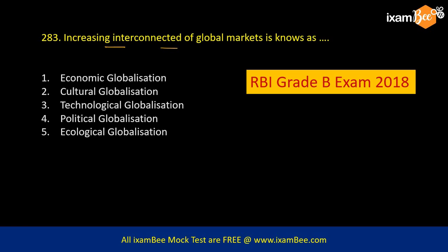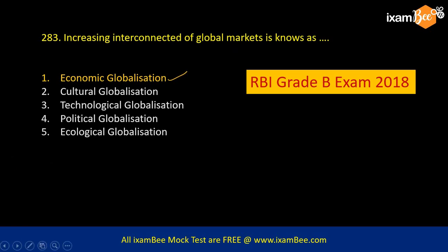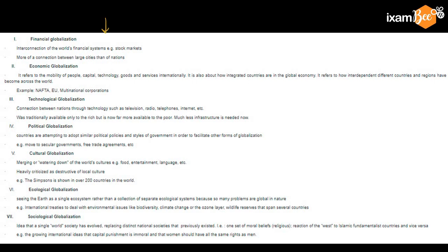Increasing interconnectedness of global markets is known as what? This question was based on a similar one asked in the 2018 exam. The best option is economic globalization. Cultural globalization means two cultures are mixing. Technological globalization involves using Facebook, social media, or Google. Political globalization involves events like Trump visiting India or Howdy Modi in the US affecting a global audience. These and ecological globalization have all been covered in the answer explanations, which are freely available on the website.